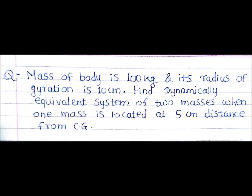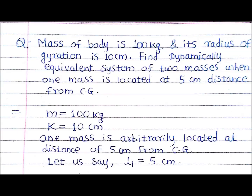To check our understanding of the dynamical equivalent system, we will start with a numerical. The numerical shown on screen has: mass of body is 100 kg, radius of gyration is 10 cm, and we have to find the dynamical equivalent system of two masses when one of the masses is located at 5 cm distance from CG. So M is 100, K is 10, and L1 is 5 cm.